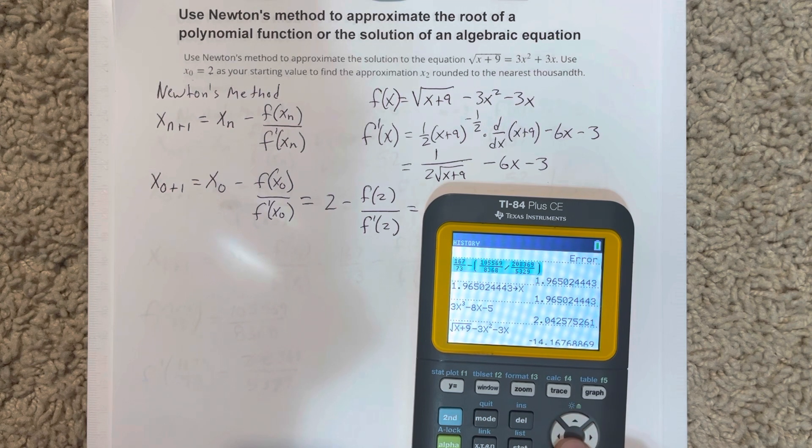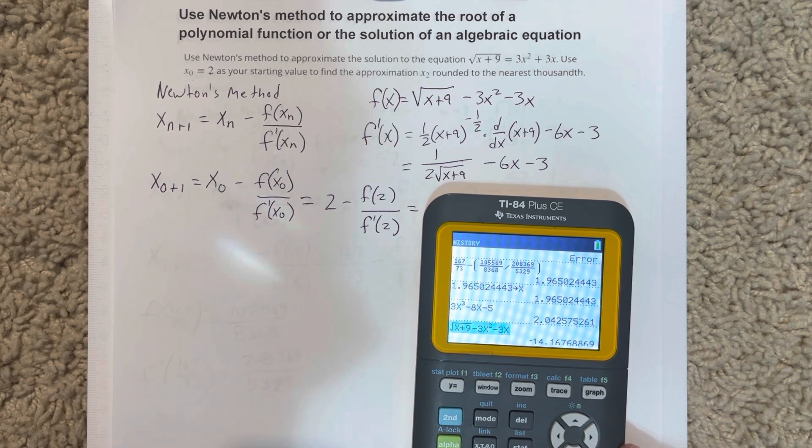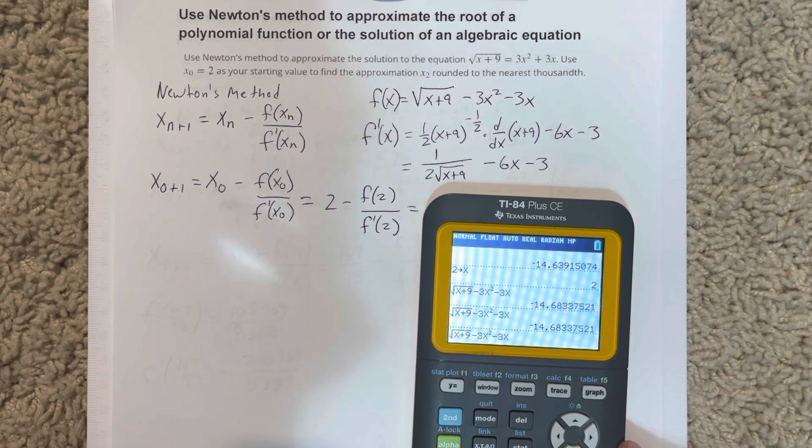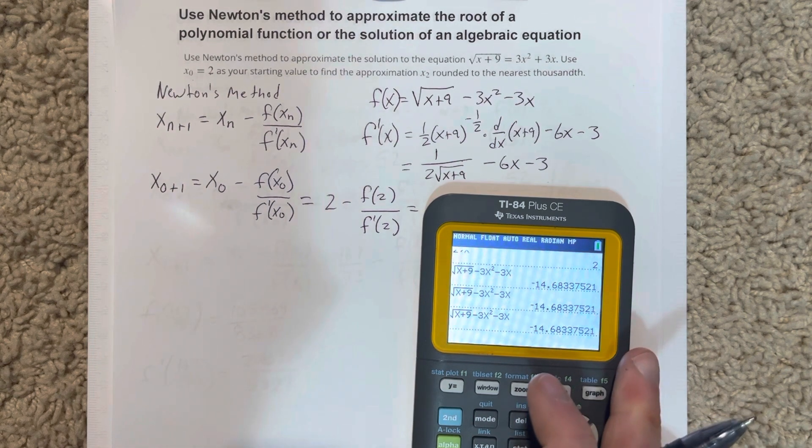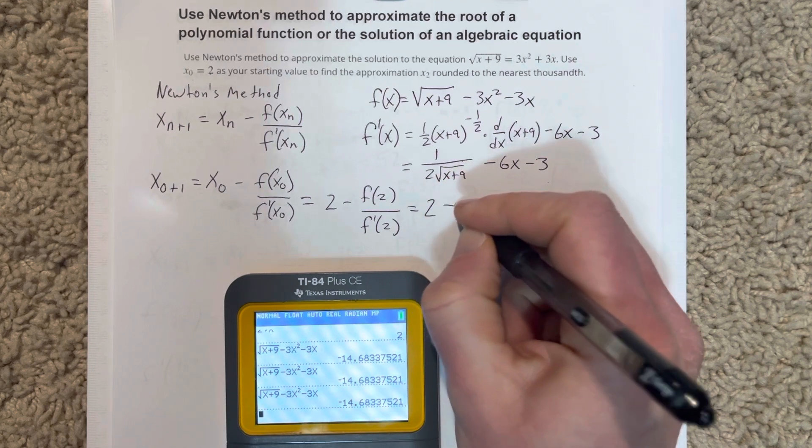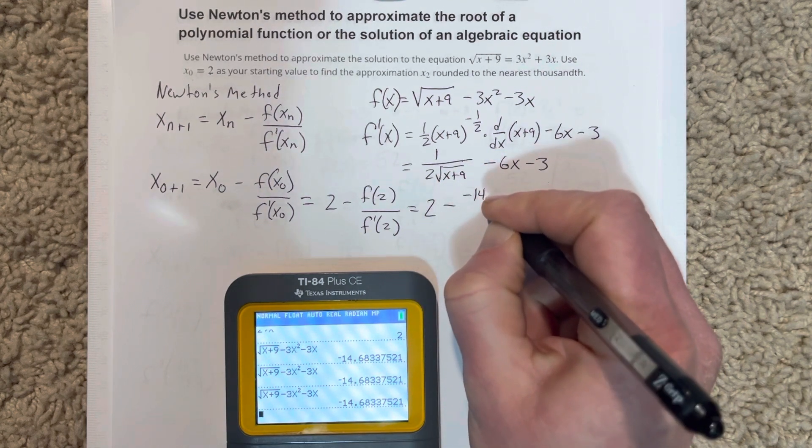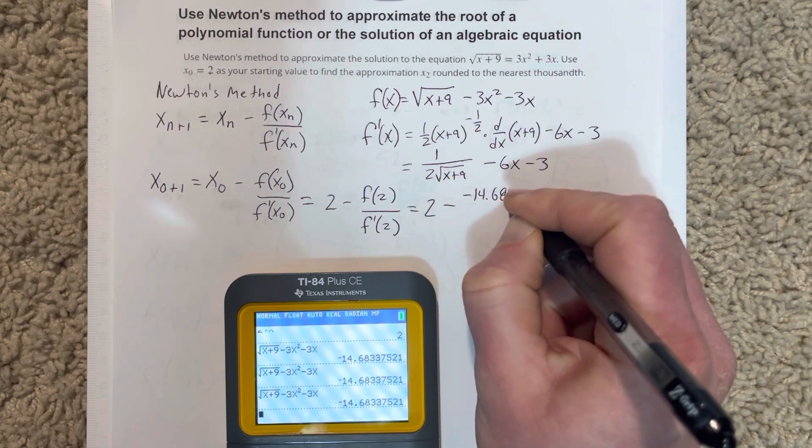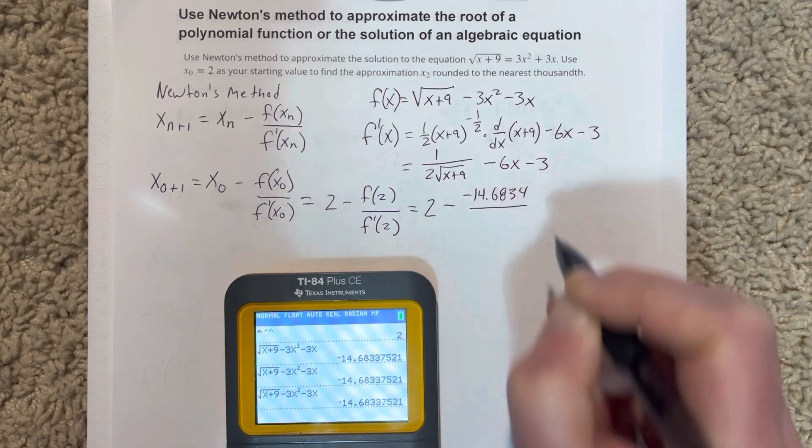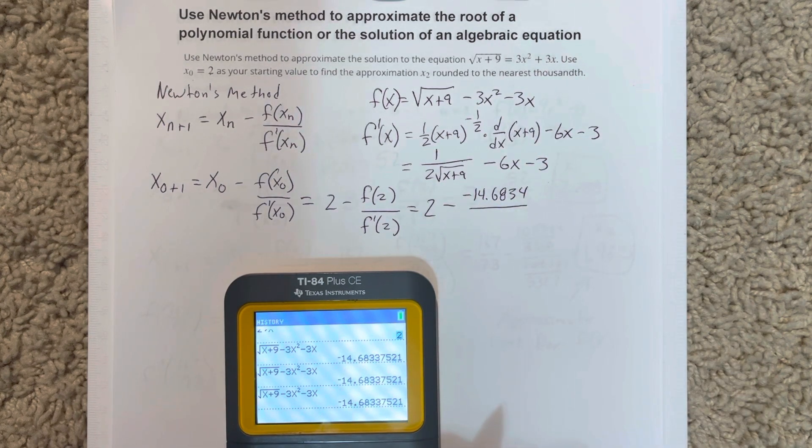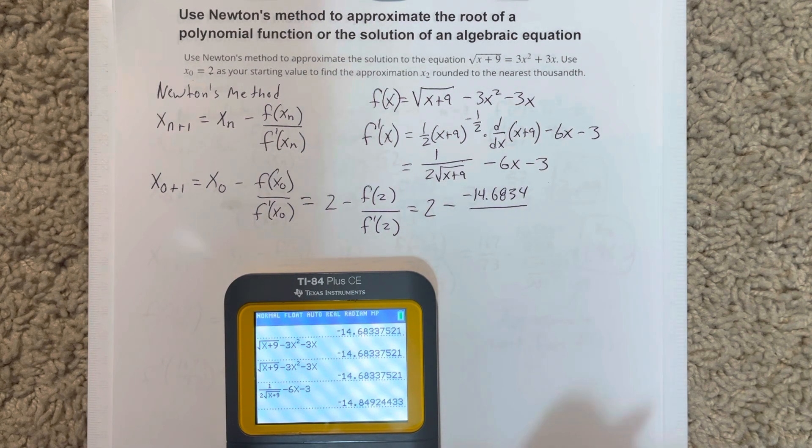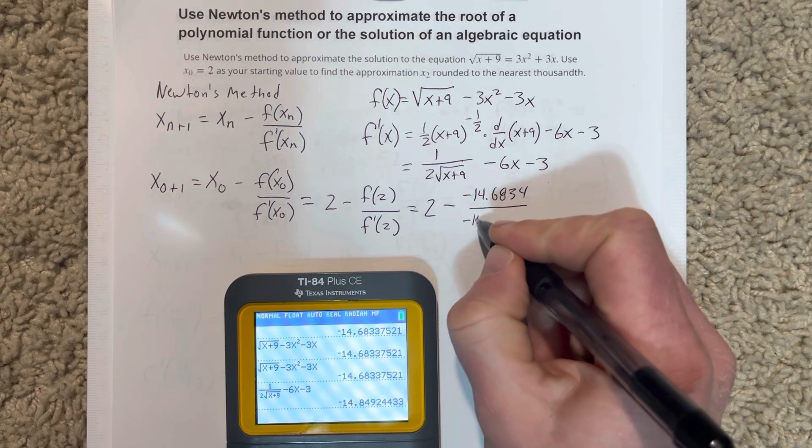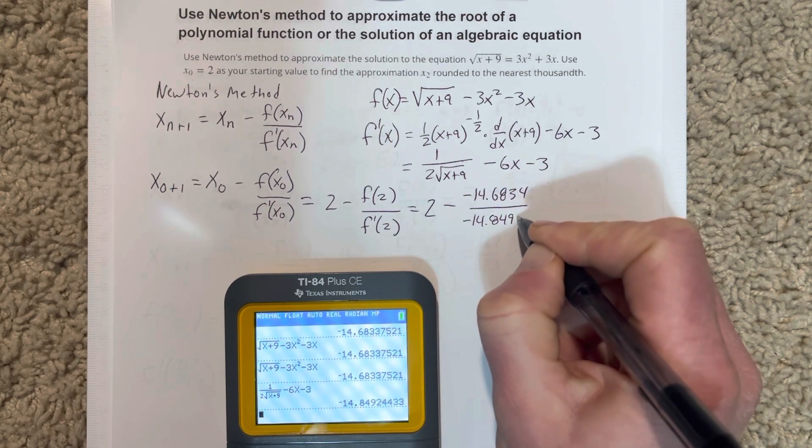Yeah, 2 stored as x. Let's grab this equation. Okay, negative 14.683. Let's write that down. That would be 2 minus negative 14.683. Let's grab that derivative equation. And we get negative 14.8492.